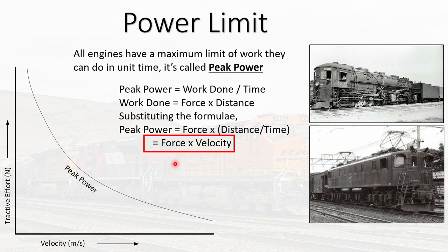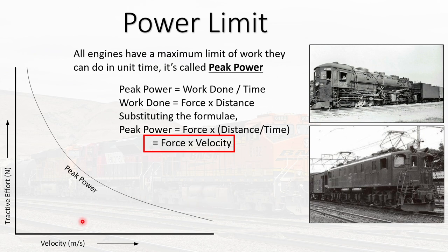Looking at the first part of the shape: all engines are power limited, meaning there is a maximum limit of work they can do in unit time. Using the physics formula, peak power equals force times velocity — P = F×V — and if peak power is constant, the graph of force versus velocity looks like a hyperbola. But there's a fundamental problem with this graph: it seems to suggest there is infinite tractive effort at low velocity and that you can have infinite velocity, but that's not true. There are physical limits to both velocity and tractive effort.